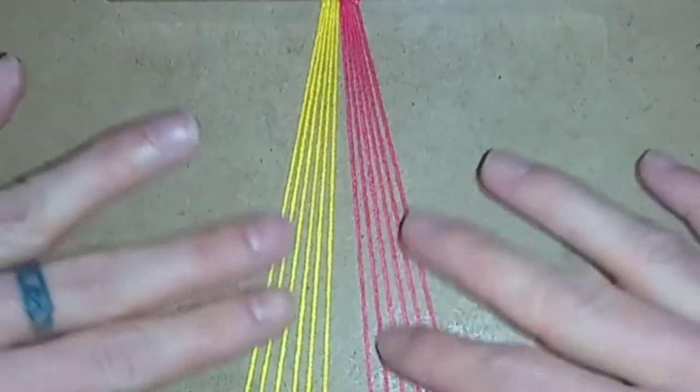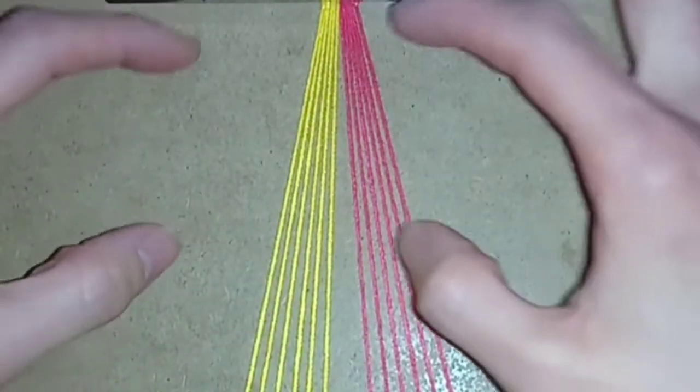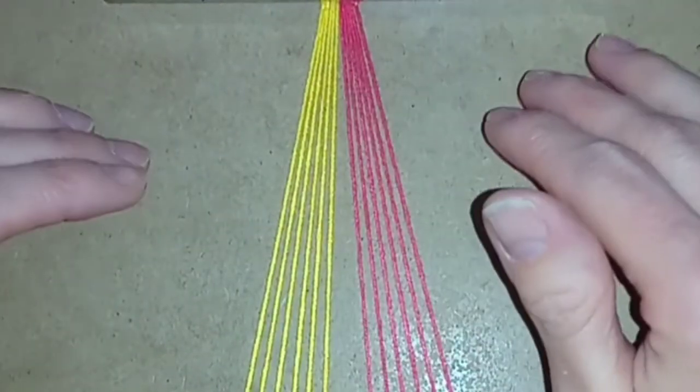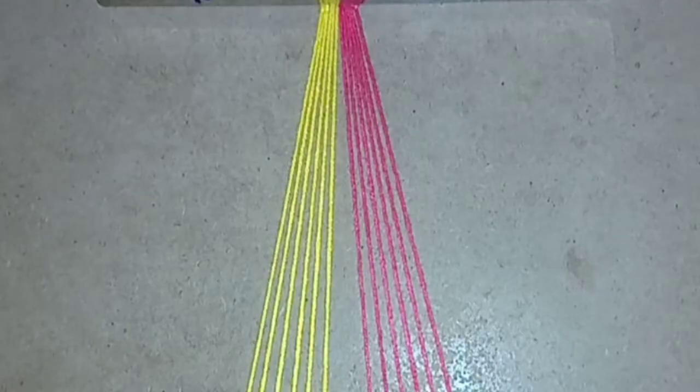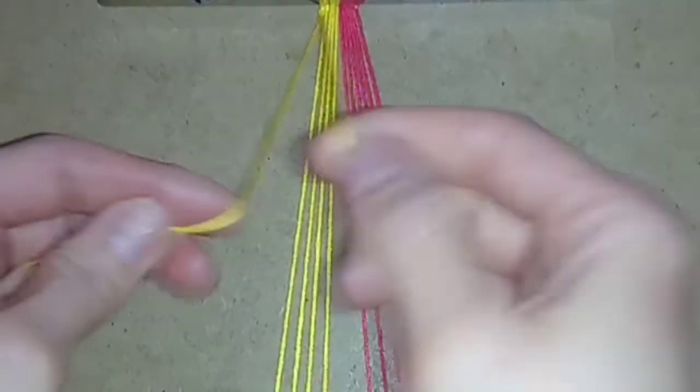This pattern is worked in two sections. For the first section you knot from left to right in traditional friendship bracelet style. For row 1 you want to do all forward knots.